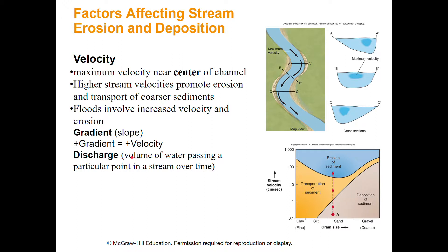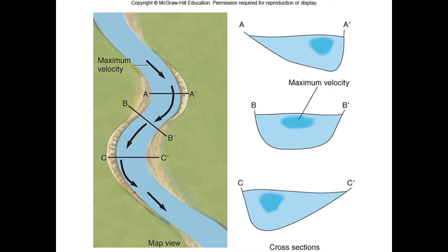Discharge is the volume of water passing through a point in a stream - how much water is moving down the stream, measured in something like gallons per second. In a meandering river, water speeds up on the outside of a bend causing erosion, while it slows down on the inside causing sediment to deposit as sandbars. Coming back around the next meander, the pattern reverses - faster water erodes the outside, and deposition occurs on the inside.